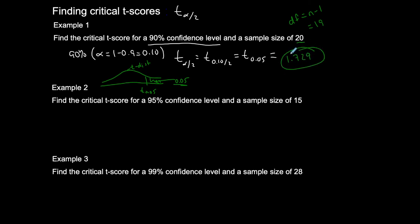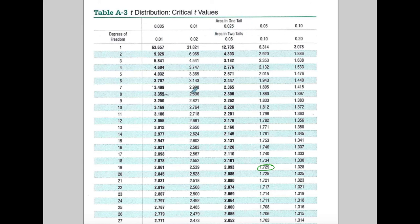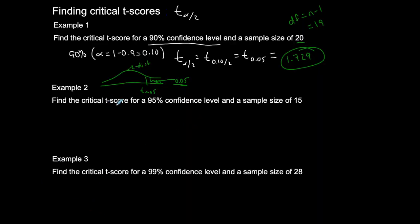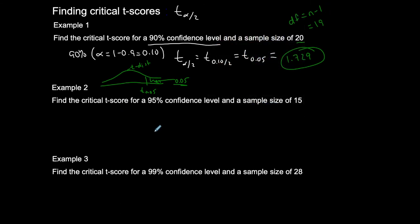When using Table A3 to find critical t-scores, you need degrees of freedom and either area in one tail or area in two tails. For confidence intervals you'll typically use area in one tail. Later, for hypothesis testing, you might use area in two tails. Let's do the next example: find the critical t-score for a 95% confidence level and a sample size of 15.